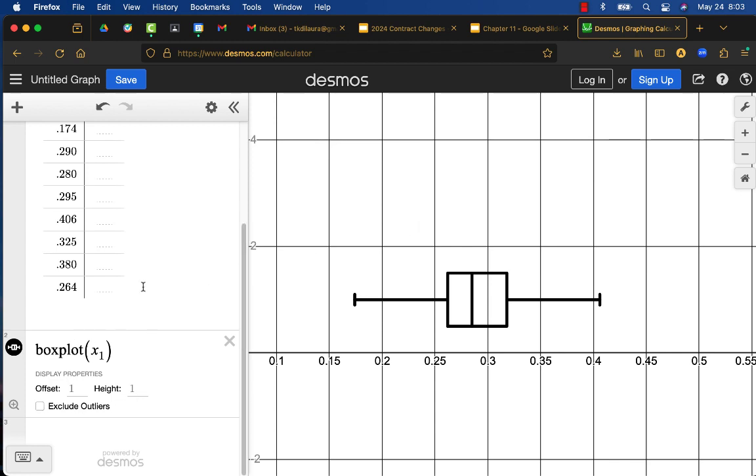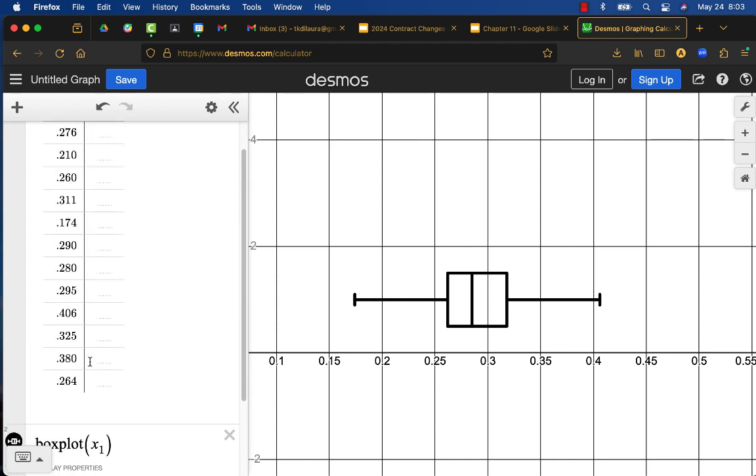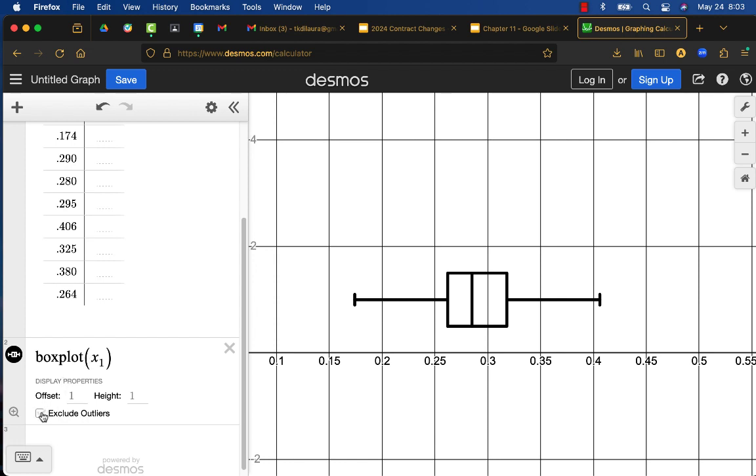Up until now we've always relied on Desmos to show us our outliers. We've input a set of data values, we've created a box plot, and we can select exclude outliers as part of our options for graphing our box plot.